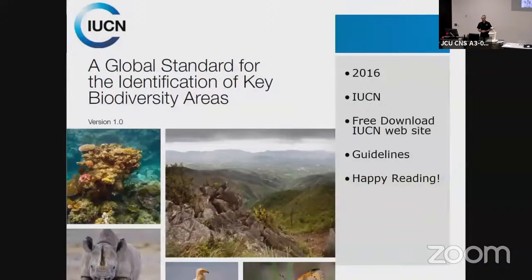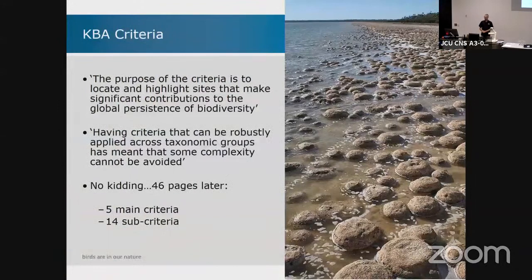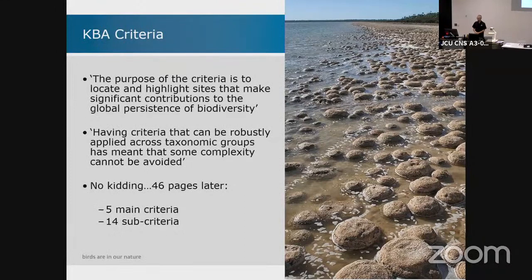That has been refined quite dramatically in the global standard for the identification of key biodiversity areas — you can download it for free. It's 46 pages, and as the document itself says: 'having criteria that can be robustly applied across taxonomic groups has meant that some complexity cannot be avoided.' To go from stromatolites to elephants, you can't just say 20,000 is a lot — it is for elephants, but not for stromatolites. They've come up with five main criteria and 14 sub-criteria.